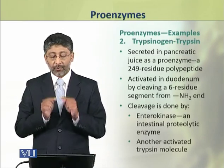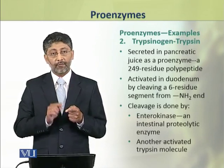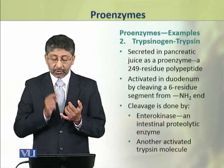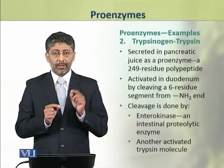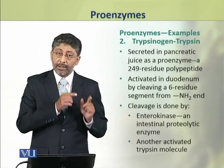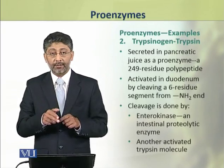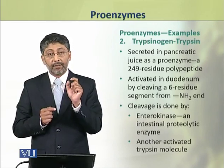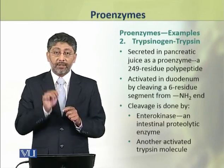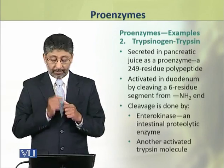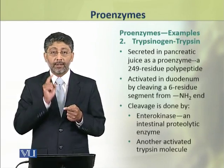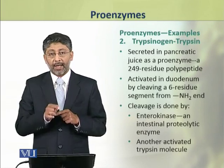The second example of a proenzyme is trypsinogen. Trypsinogen is secreted in pancreatic juice as a proenzyme. It is a polypeptide which contains 249 residues. It is activated in the duodenum by cleaving it. A 6-residue segment is cleaved from the amino terminal end. After cleaving this 6 amino acid residue segment, it becomes activated. This cleavage is done by two types of enzymes, one of which is the enterokinase enzyme, which is an intestinal proteolytic enzyme.